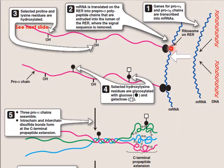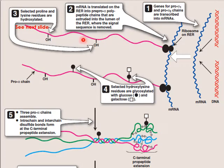The pre-pro-alpha polypeptide chains are sent into the lumen of the rough endoplasmic reticulum, where their signal sequence is removed. Once the signal sequence is removed, the pre-pro-alpha polypeptide chain is converted into a pro-alpha chain. This pro-alpha chain will now be converted into mature collagen fibers through subsequent steps.